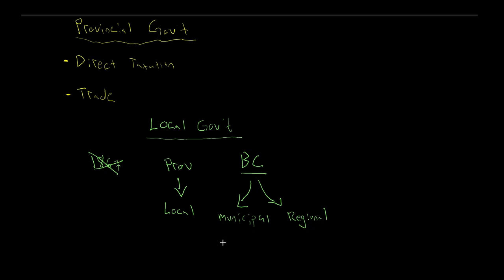Taking a look at the province of British Columbia, we have two forms of local government: municipalities and regional districts. We have 162 municipalities in the province — these are your cities, towns, and villages, the incorporated regions becoming our metro centers. There are 27 regional districts altogether; these include the rural areas outside of the municipalities. For example, here on the South Island we're part of the Capital Regional District, which encompasses most of the South Island, going all the way up to Sooke, including some of the Gulf Islands, up to Sidney, and all the rural area in between. As you go over the Malahat, you then go into the Cowichan Valley Regional District, then the Nanaimo Regional District, on and on.